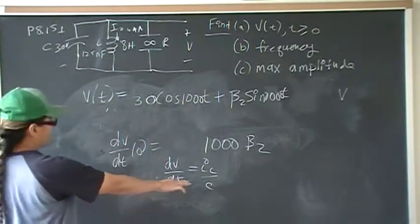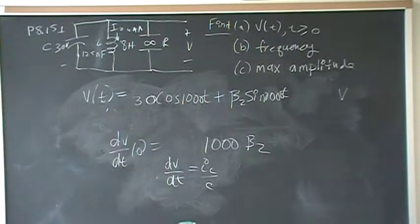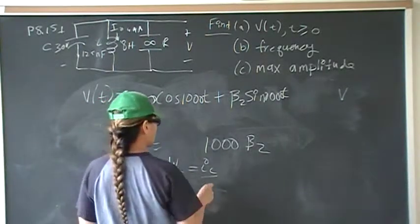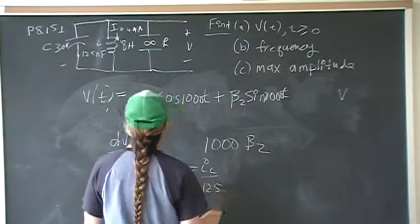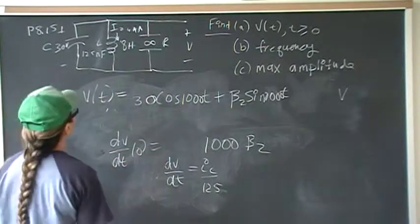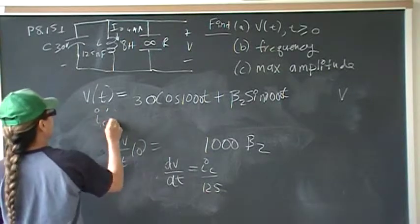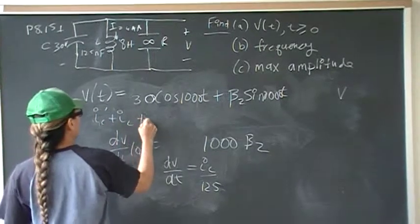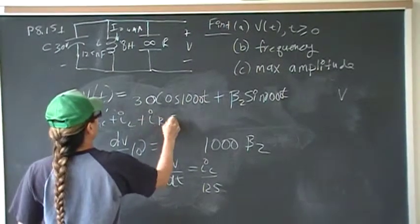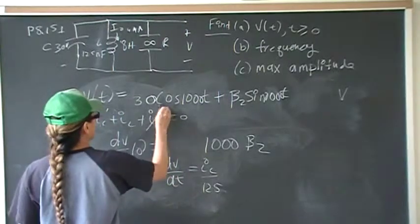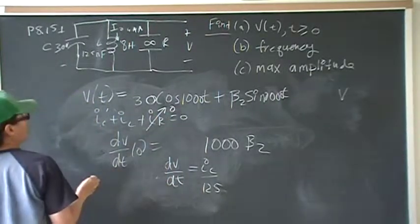So to find what IC is, we know that capacitance is 125 nanos, we simply do KCL through there. By KCL we know IC plus IL plus IR equals 0. And this is 0 because it's an open, no current.